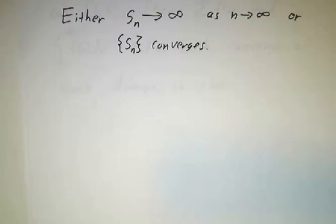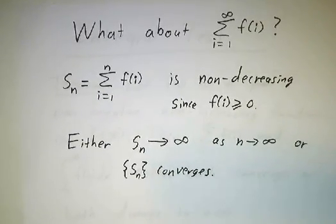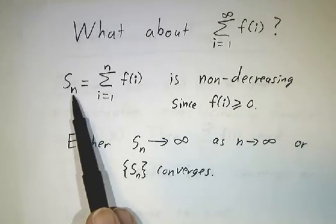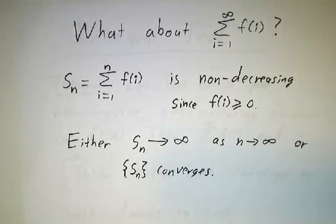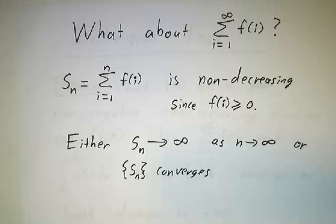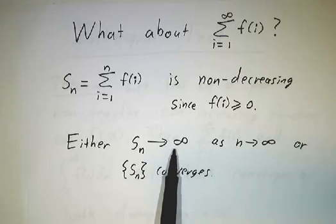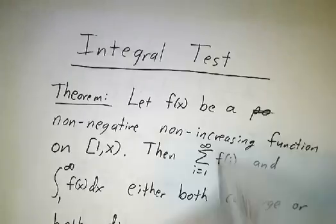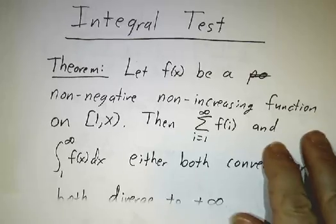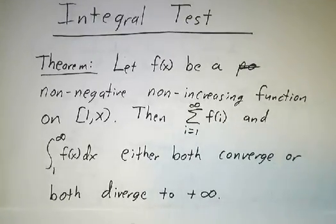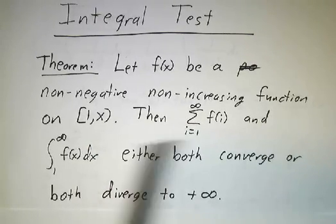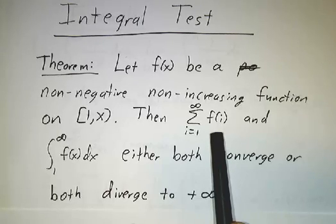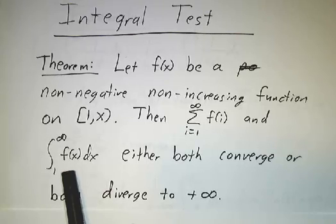The same dichotomy applies to infinite sums. As you add more terms, Sn is non-decreasing. By the monotonic convergence theorem, if it's bounded it converges; if it doesn't converge, it's not bounded. So either the partial sums go to infinity or the whole thing converges. The integral test says that whatever happens with the sum happens with the integral and vice versa: as long as we're dealing with a non-negative, non-increasing function, either both the sum and the integral converge or they both diverge.